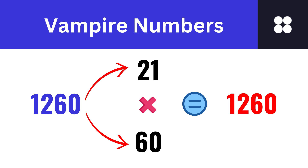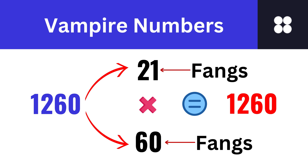A vampire number is a number that can be written as the product of two numbers called FANGs. The FANGs are of the same length, where all the digits of the vampire number are present in the FANG numbers. The first vampire number is 1260, which equals 21 multiplied by 60. The rearrangement of these digits forms the factors. The vampire number 1260 can be written as the product of two equal-length numbers — its FANGs, 21 and 60 — which contain the same digits 2, 1, 6, 0 as the vampire number.